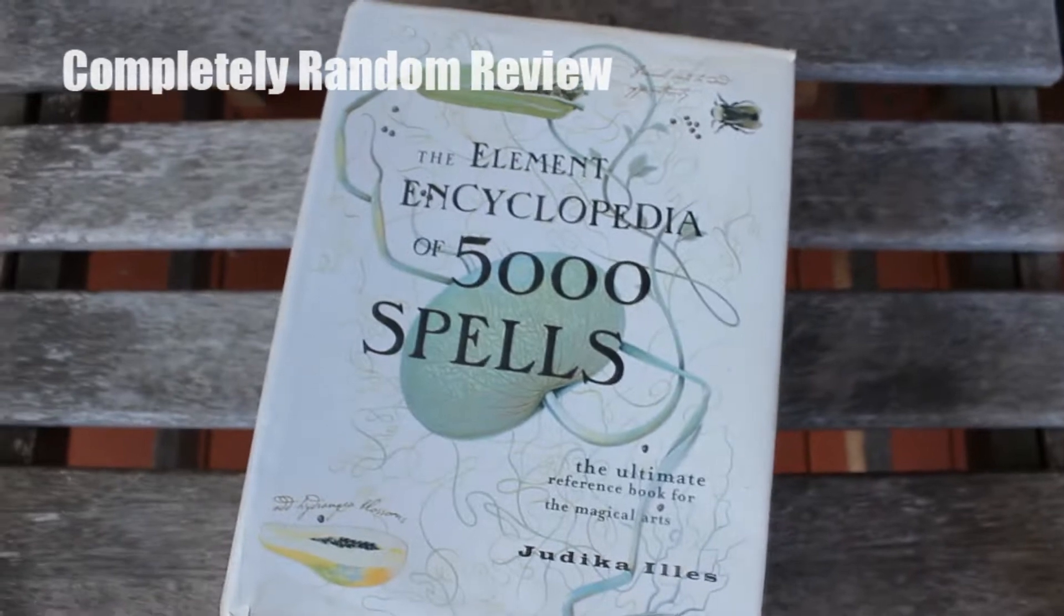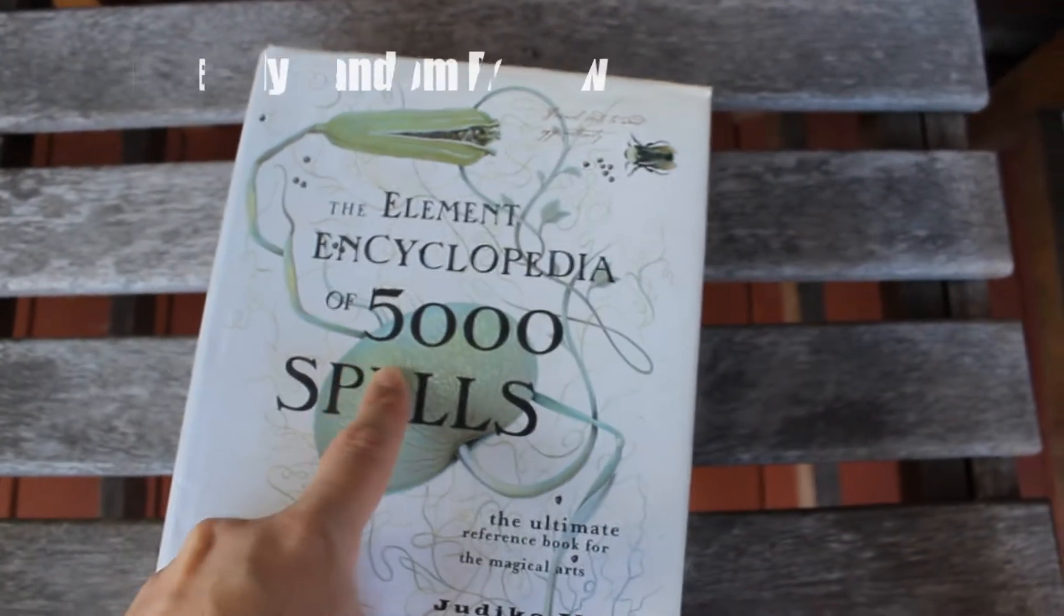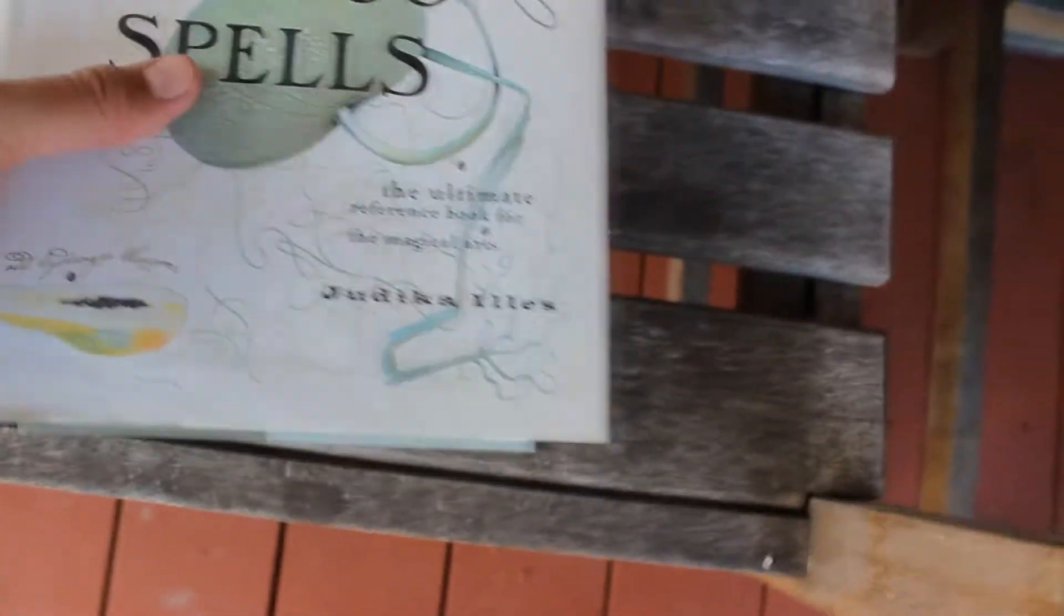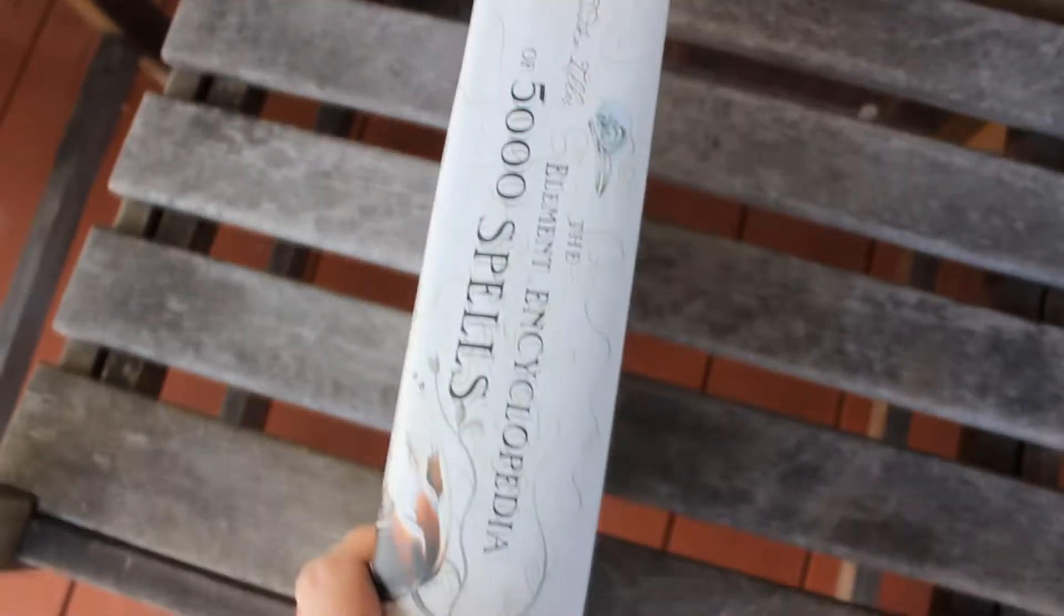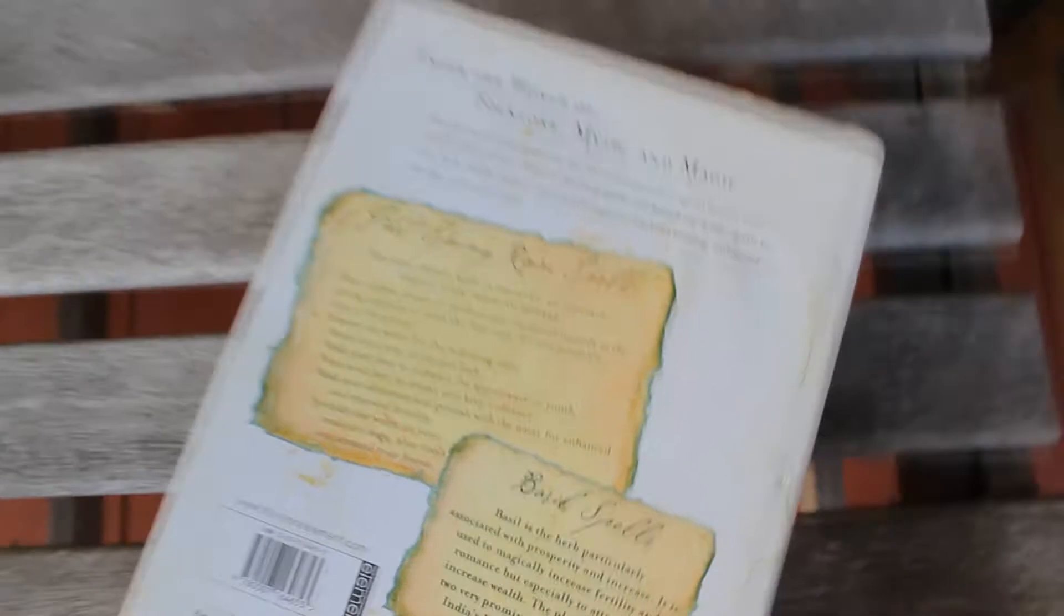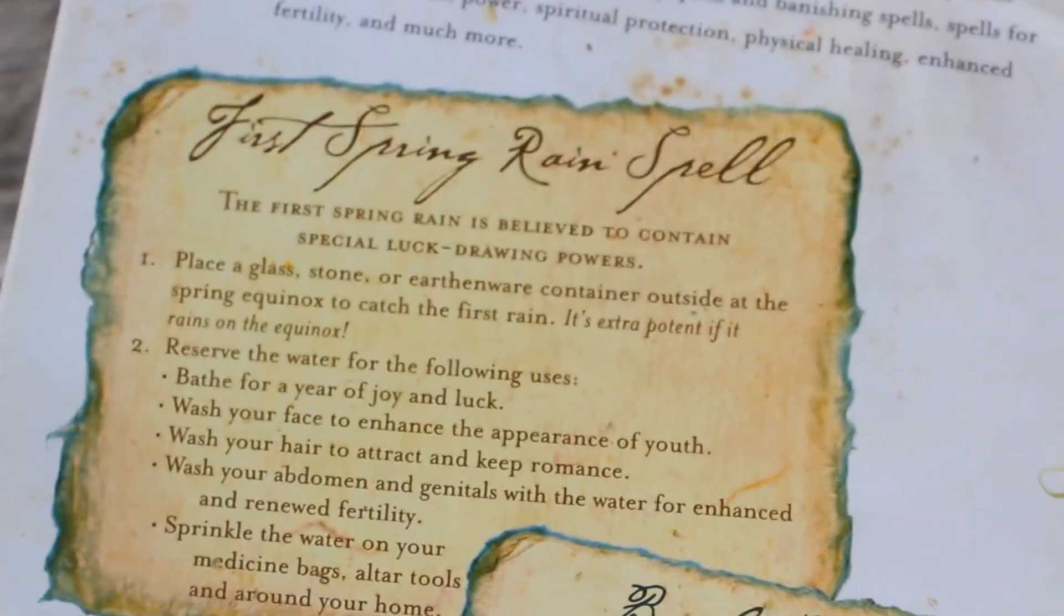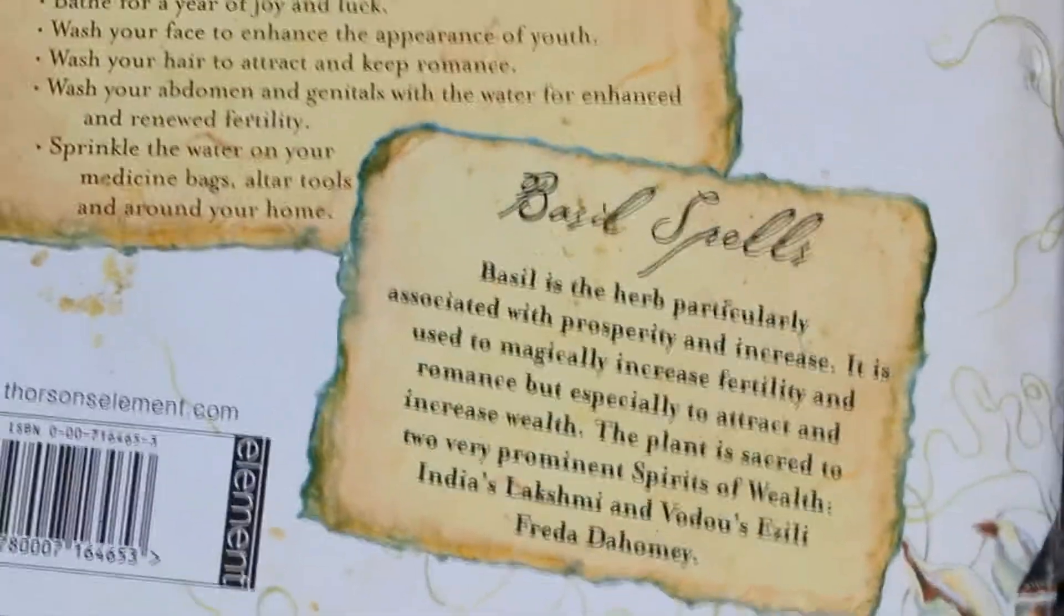Today we're reviewing the Element Encyclopedia of 5,000 Spells. Are you a witch or wizard waiting to get your letter from Hogwarts and being all like, bruh, what's up? I'm 22 years old, I'm still waiting. And then you realize that Hogwarts is a completely made up place and you've been wasting your life.